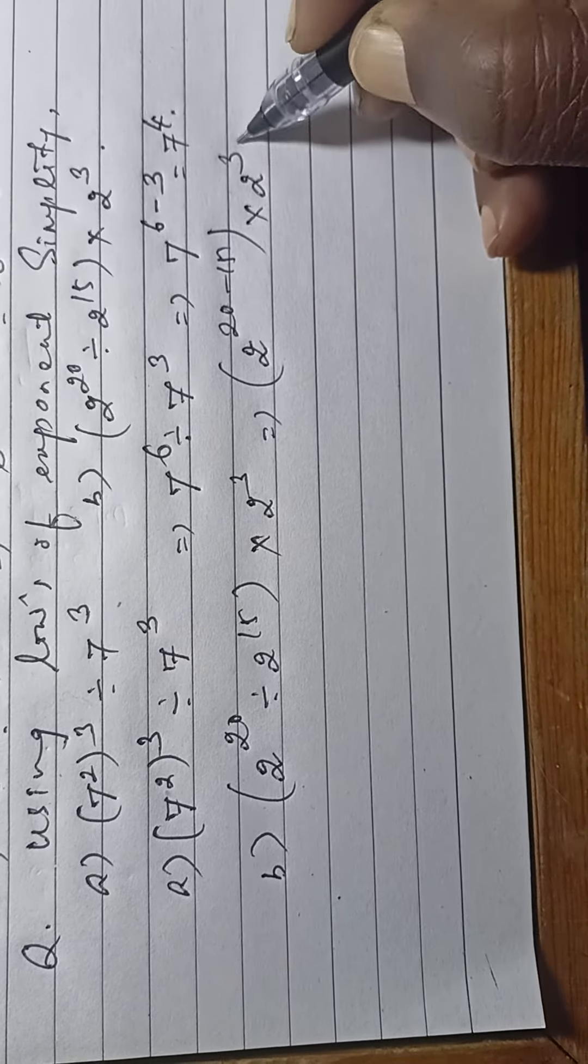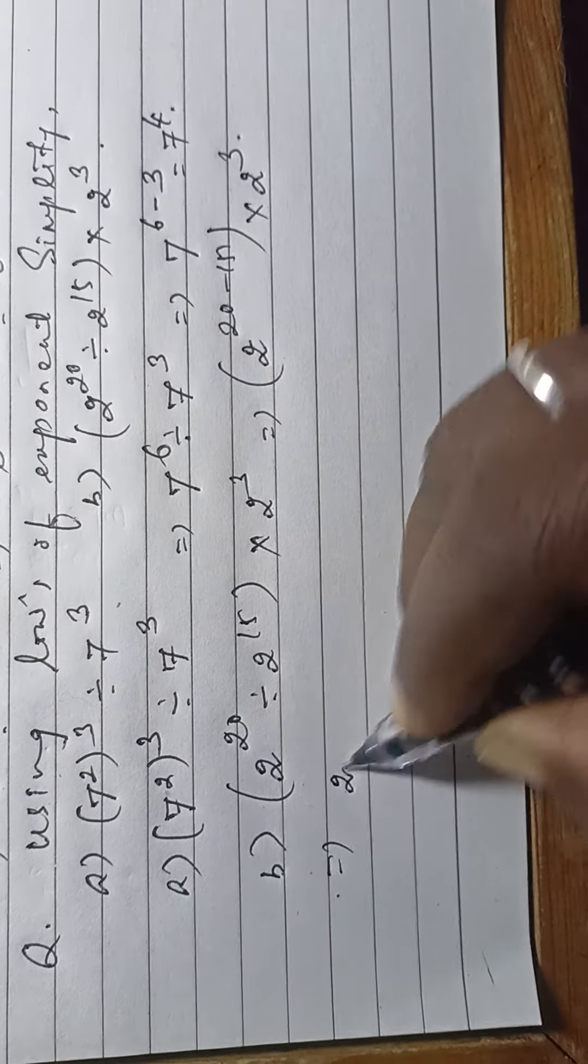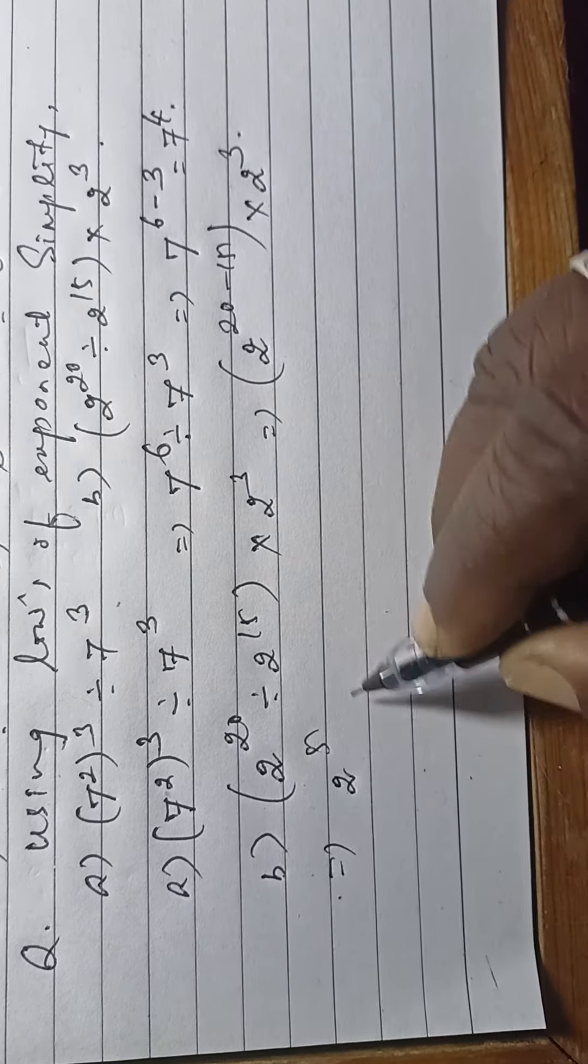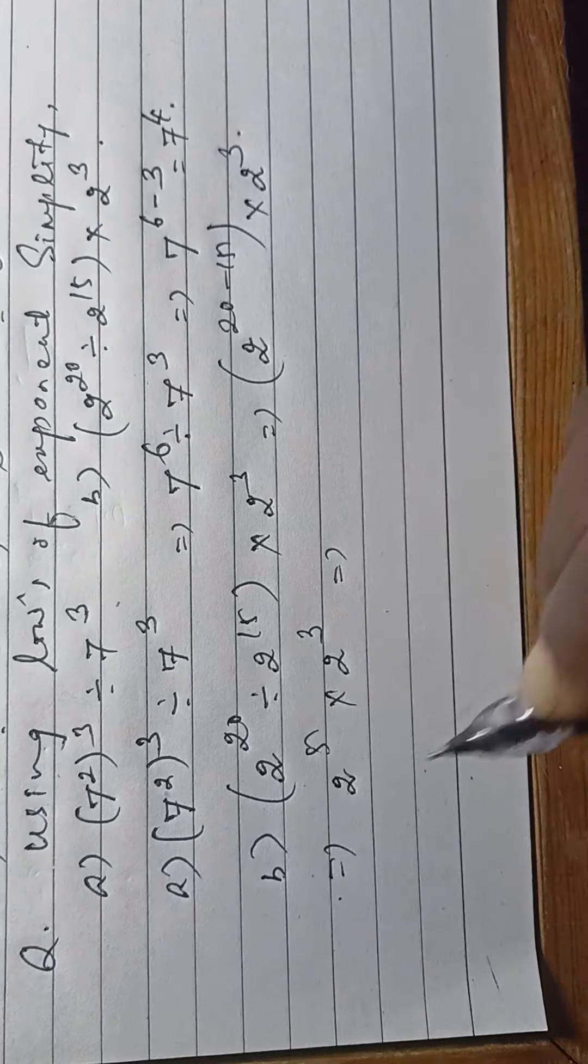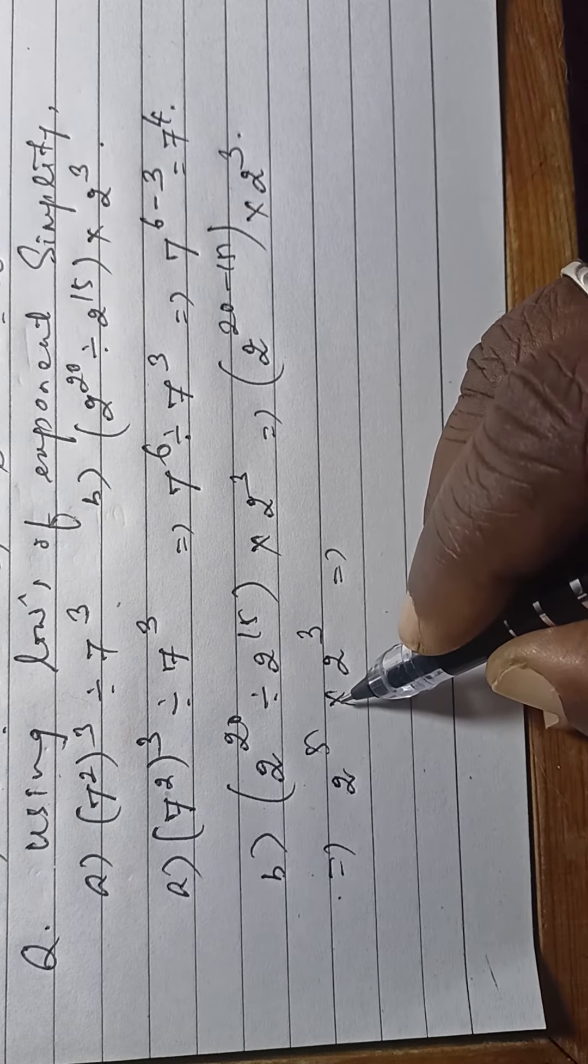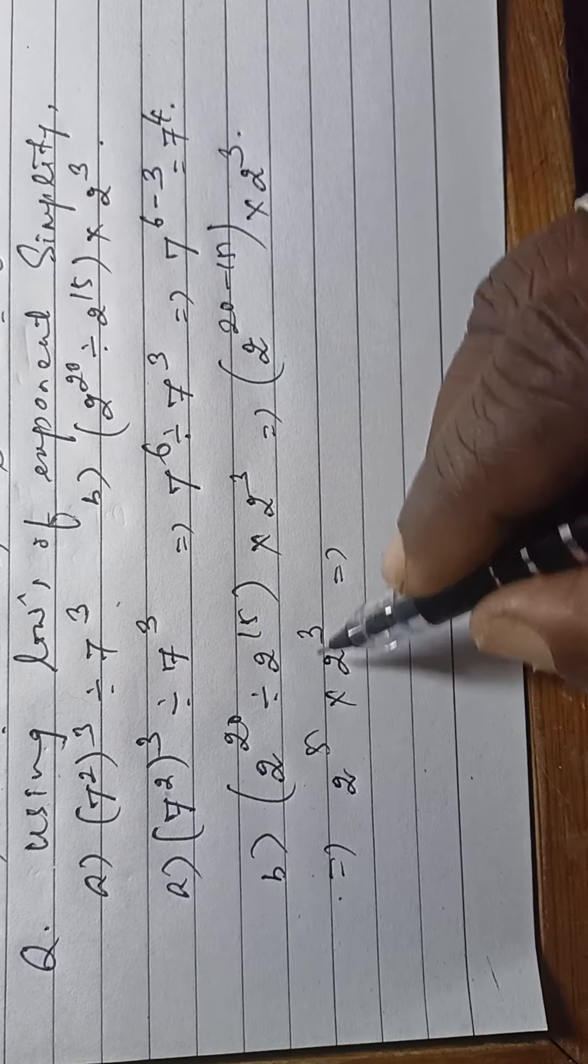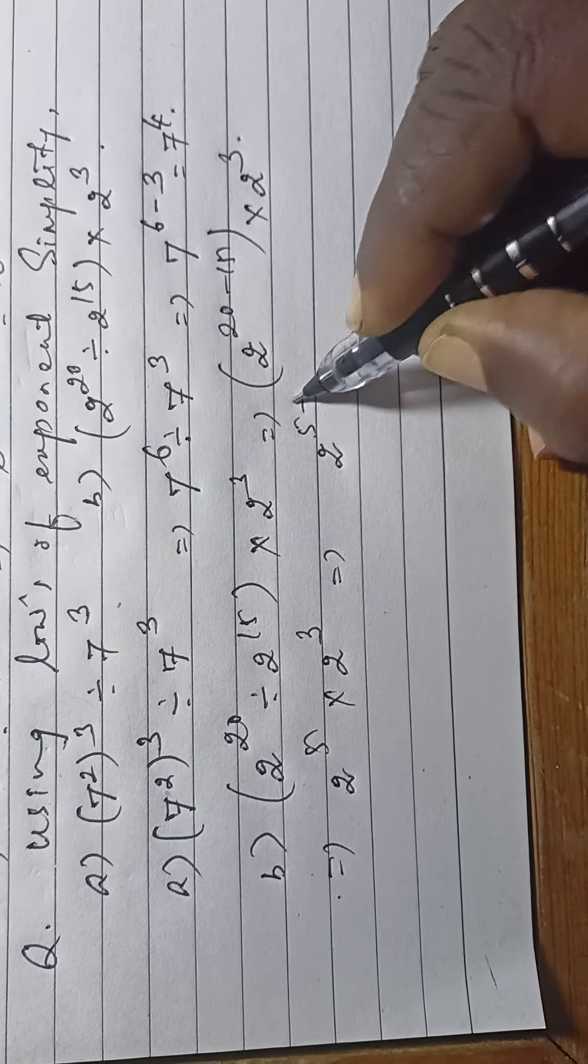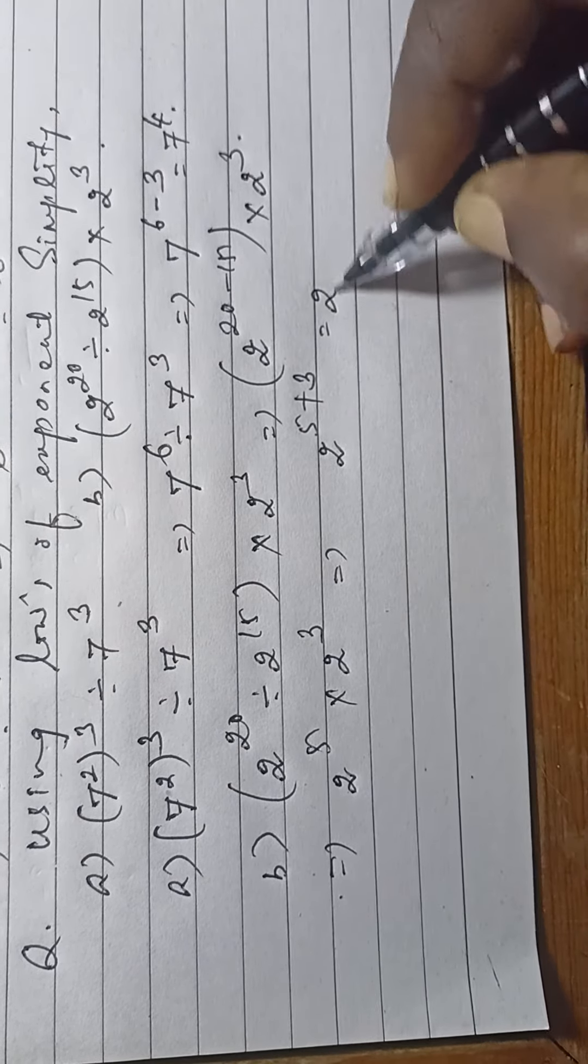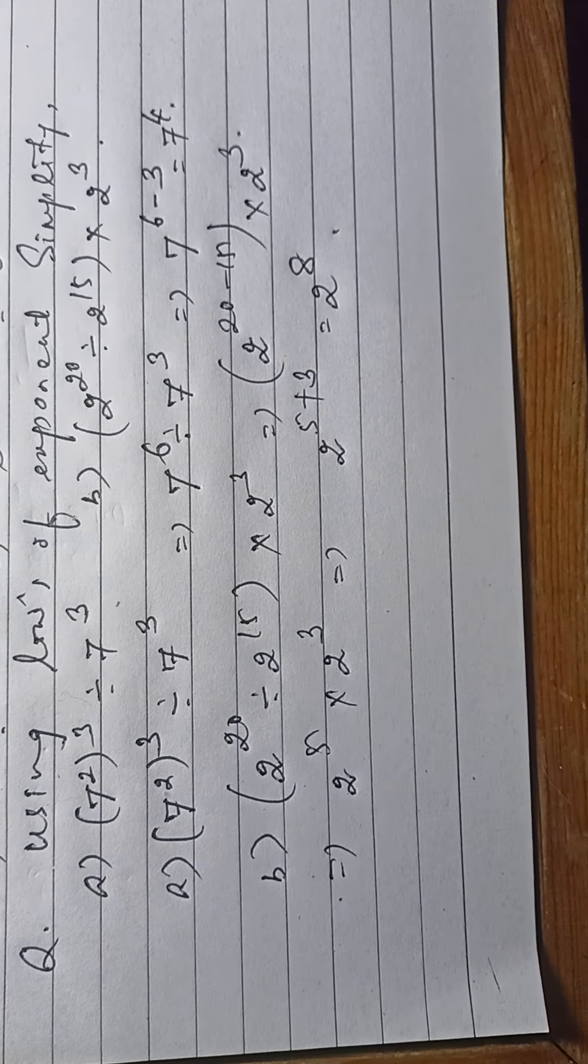Now the bases are equal and the condition is multiplication, so the powers will be added: 2 to the power 5 plus 3, which equals 2 to the power 8. This is the answer.